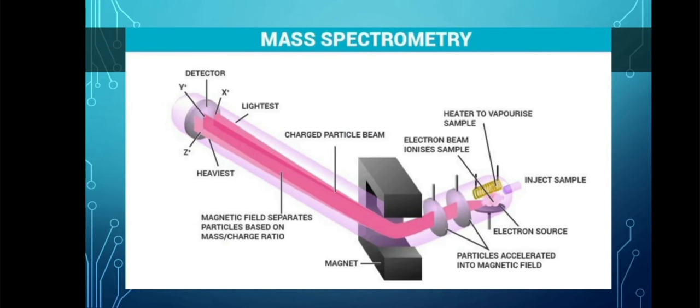Mass spectroscopy is a powerful analytical technique used to quantify known materials, to identify unknown compounds within a sample, and to elucidate the structure and chemical properties of different molecules. The complete process involves the conversion of the sample into gaseous ions, with or without fragmentation, which are then characterized by their mass to charge ratios and relative abundances. This technique studies the effect of ionizing energy on molecules and depends on chemical reactions in the gas phase.